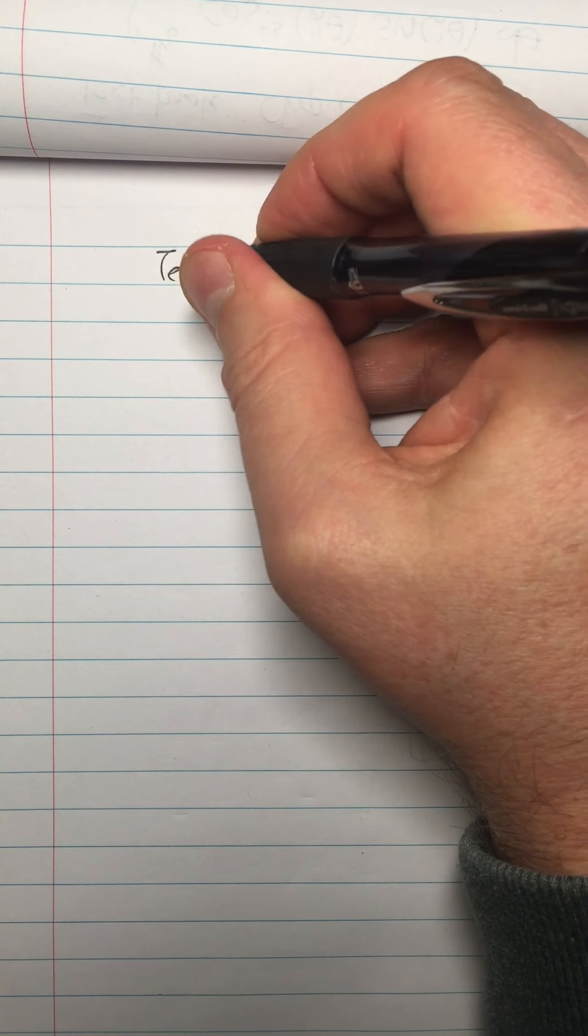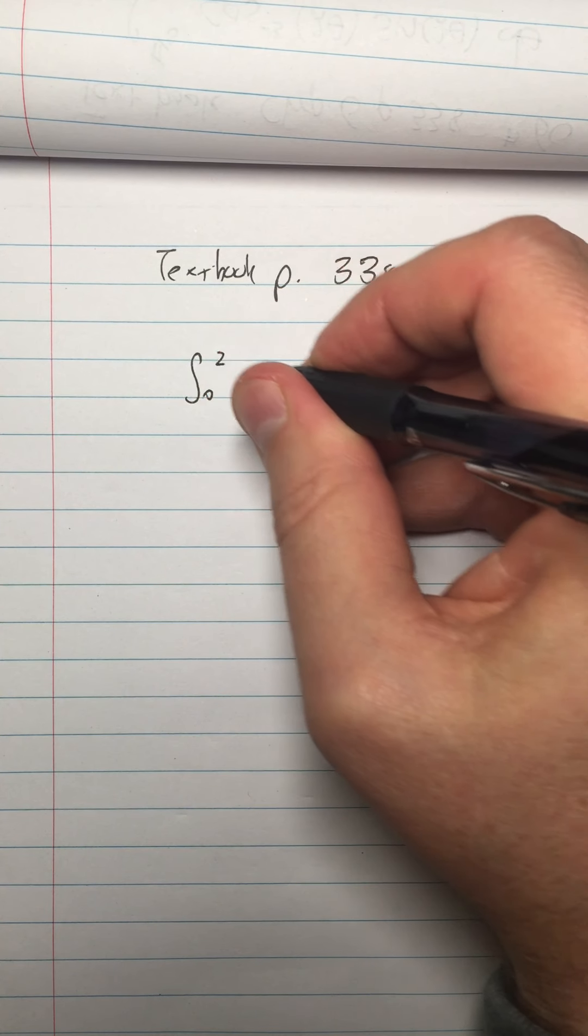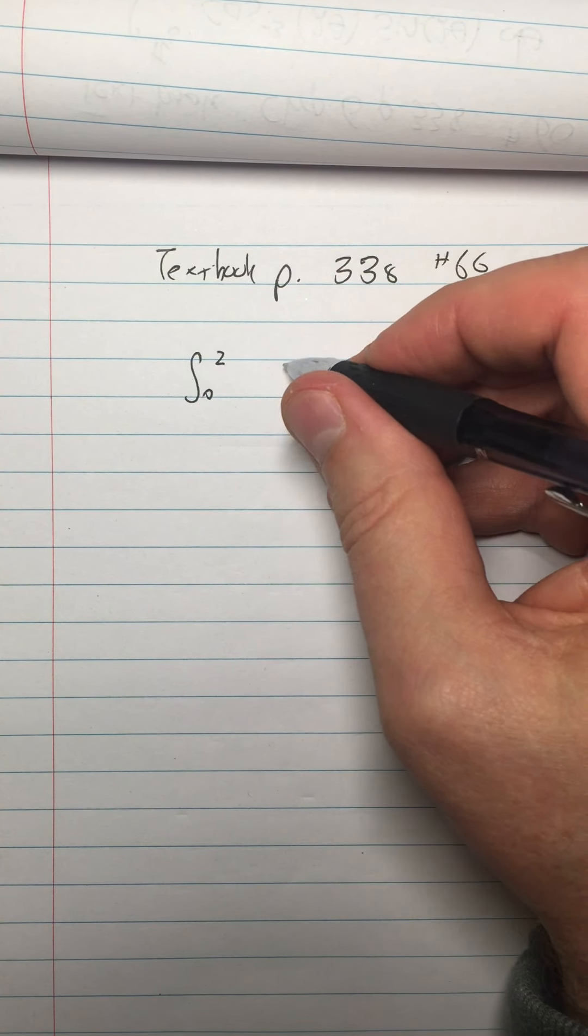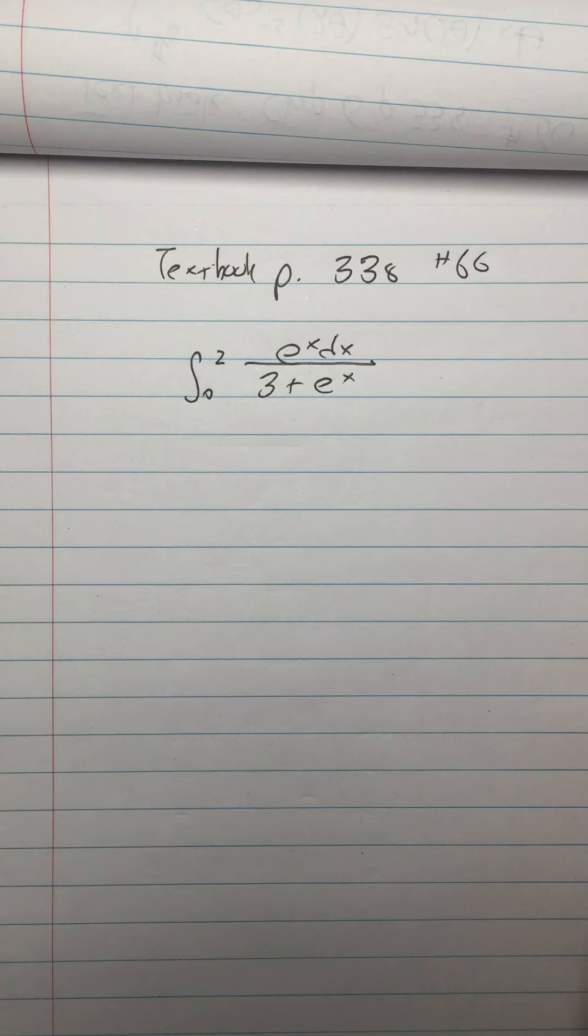Okay, so this is textbook page 338, number 66. We're doing the integral 0 to 2. You know what? I'll do this one the more orthodox way so you can see the different ways of doing it. e to the x dx over 3 plus e to the x.